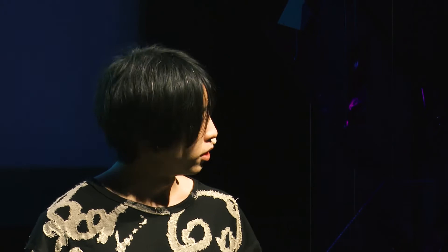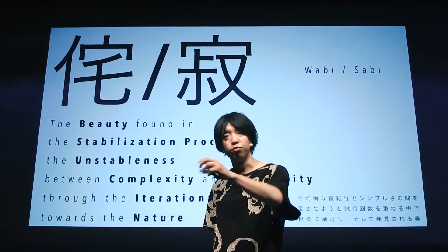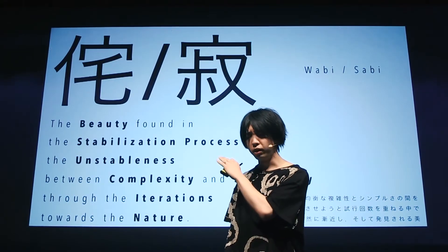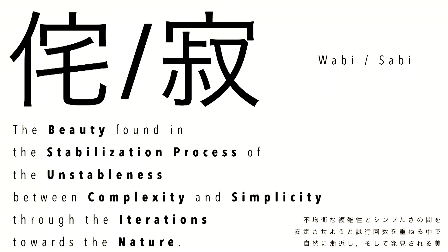It is a kind of stabilization process of beauty — the unstableness between nature, like stones covered with moss or a garden where we place stones and many species come through, finally completing the beauty. This is the same as in the digital step: deep learning or generative adversarial networks are almost a stabilization process between complexity and simplicity. If we define this Japanese ancient term after the digital process, we can connect the ancient process towards the recent process.